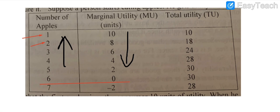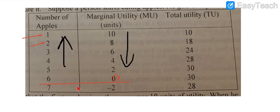After this level, when marginal utility is 0, if the consumer continues to increase units, this additional unit will result in negative marginal utility. So up to a certain level, if the consumer increases a unit, marginal utility will decrease. After that level, it results in zero marginal utility, and beyond that, marginal utility will be negative.